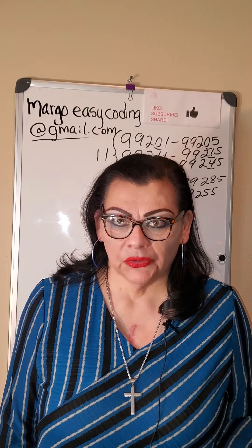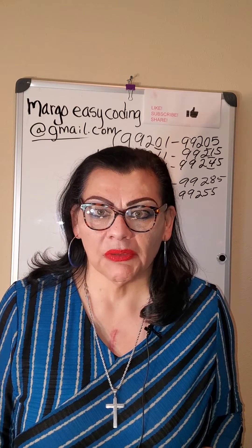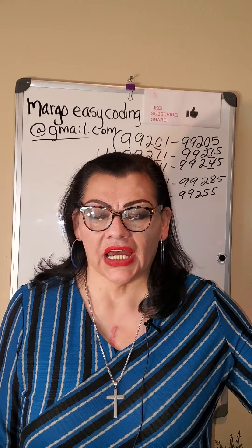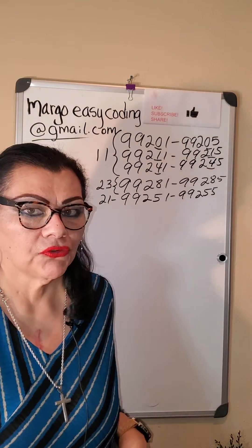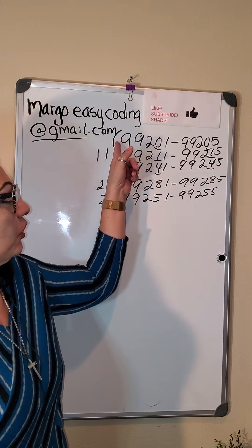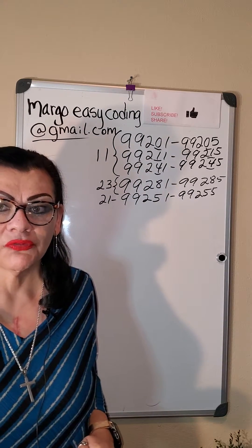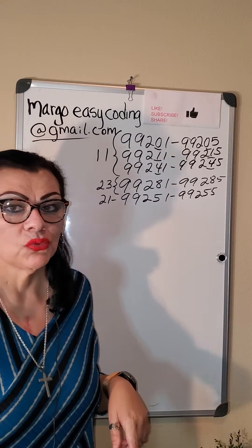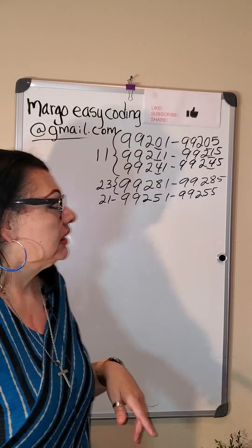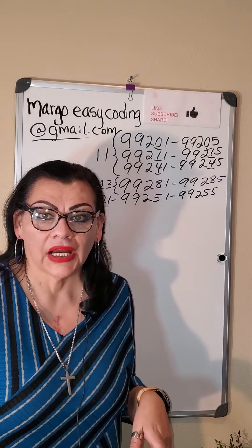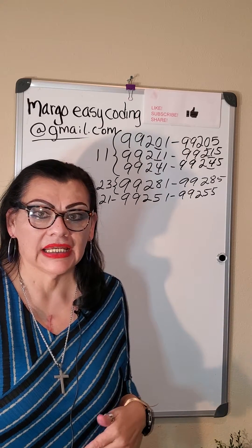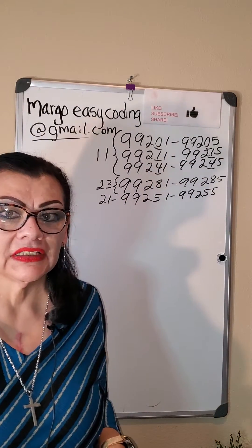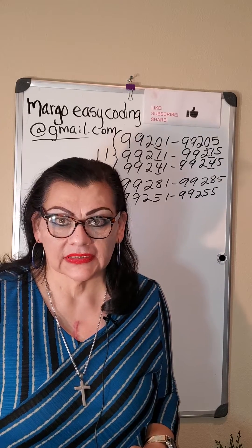Let me do a quick review, and remember you need to watch my videos in order so that they will make sense to you, because we are building up the codes as we go. So first of all we have learned about office visits: 99201 to 99205 for a new patient, 99211 to 99215 for an established patient, 99241 to 99245 for a patient that goes to see a specialist. And for all those codes our place of service is always 11 — place of service, office, 11.